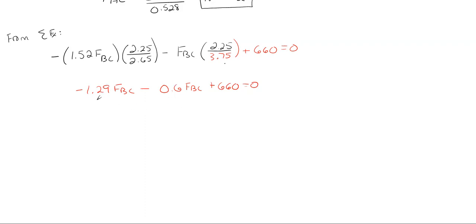I'm going to combine like terms here of the minus 1.29 and the 0.6. And I'm going to take the 660 to the opposite side. So minus 1.29 minus 0.6 gives me a minus 1.89 FBC. And then minus 660 when I take it to the other side. So FBC will be minus 660 over minus 1.89. And this gives me 349.2 Newtons in that general downward left direction.